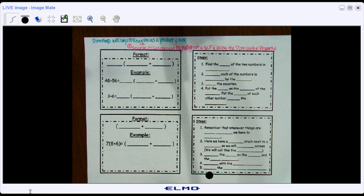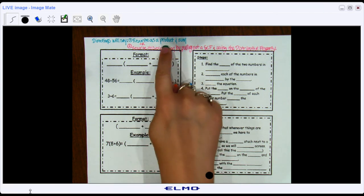Hello, my little mathematicians. Today, we're going to be expanding upon our GCF lesson and do what's referred to as pulling out a GCF so that we can rewrite an expression as a product and a sum.